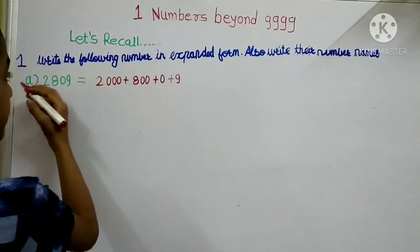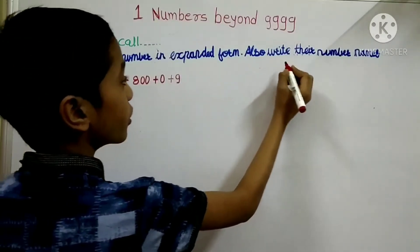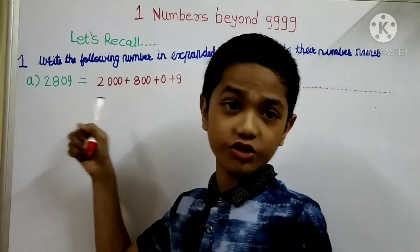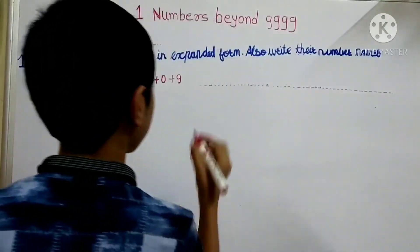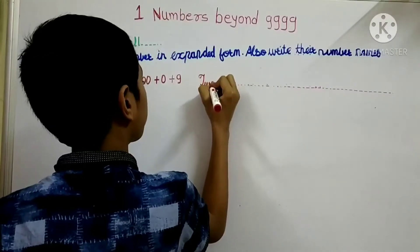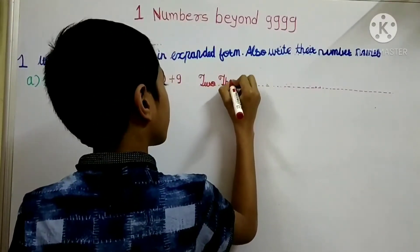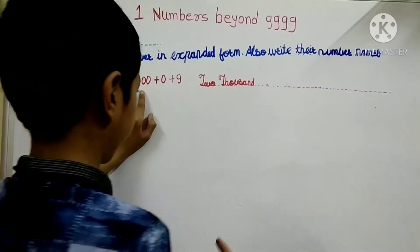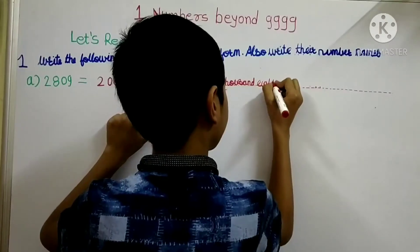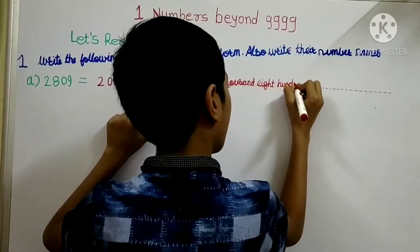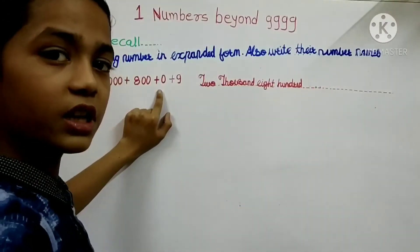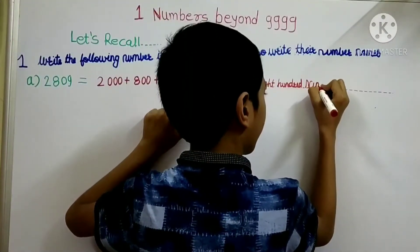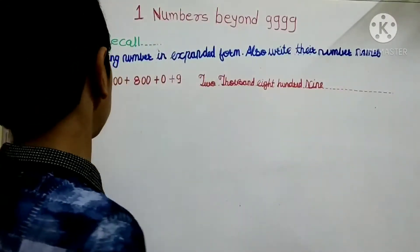Now we have done half the question's answer. There is also 'write their number names,' so we will write the number name for 2809. Two thousand — 2000. Then we will write 800 — eight hundred. There is a 0 so we will not write it. We will write 9 — nine. This is our full answer for part A.